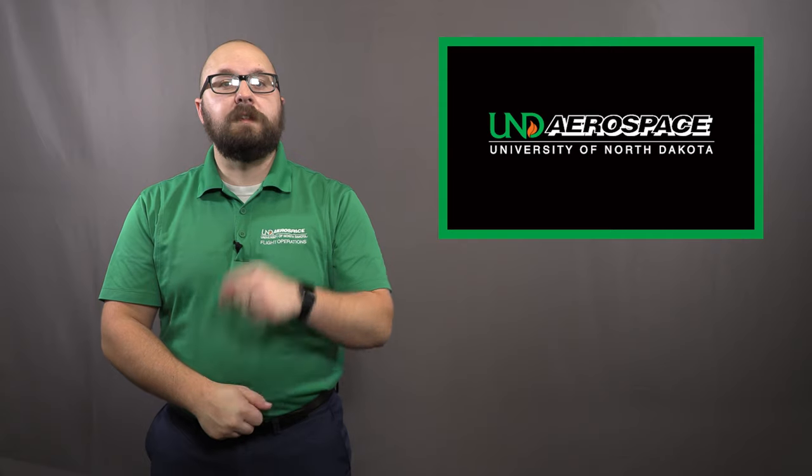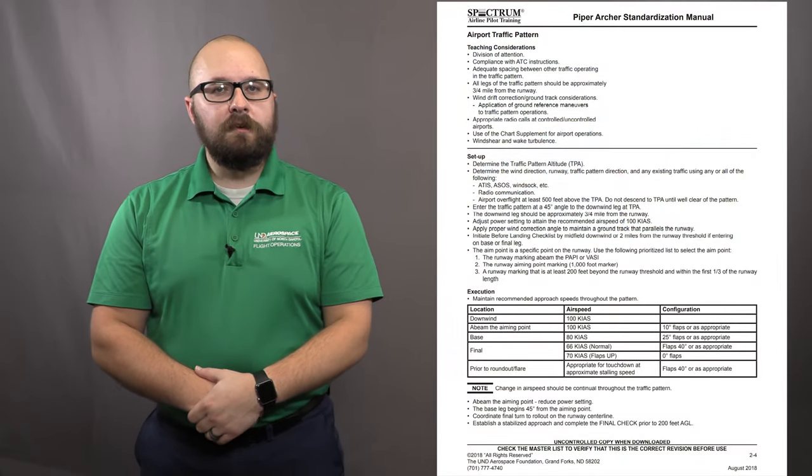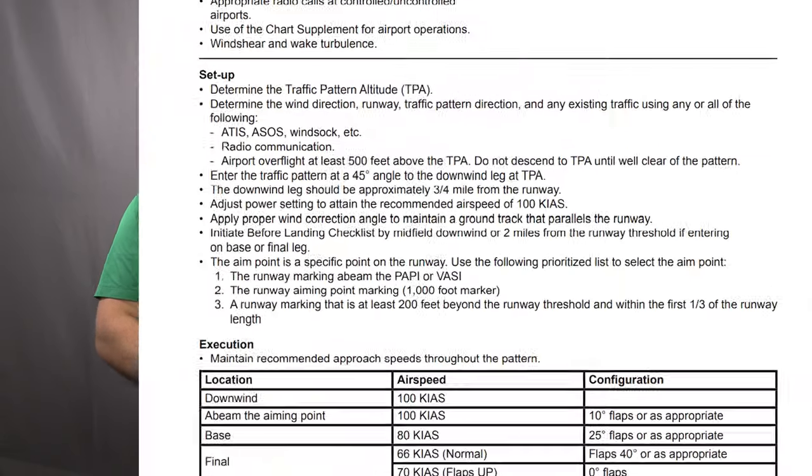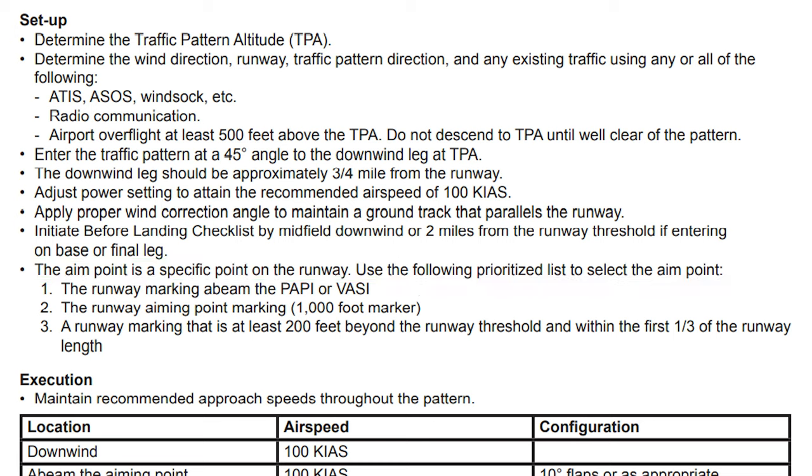The perfect landing begins in the downwind. This is where we start to configure the airplane for the final descent to land and begin our decision making. We start by identifying our aiming point. The Archer standardization manual tells us the aiming point is a specific point on the runway. The standman provides us with a prioritized list to select the aim point.